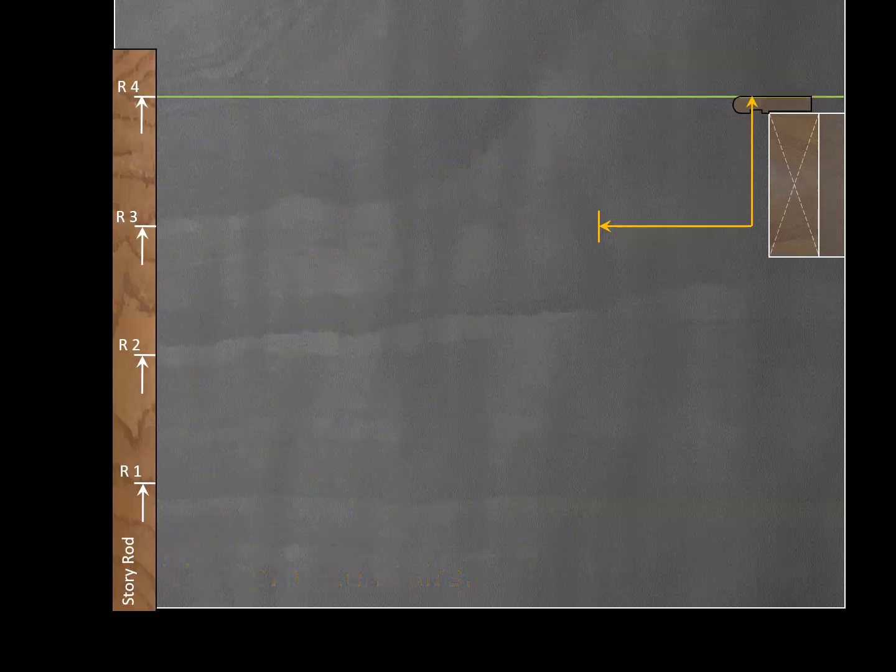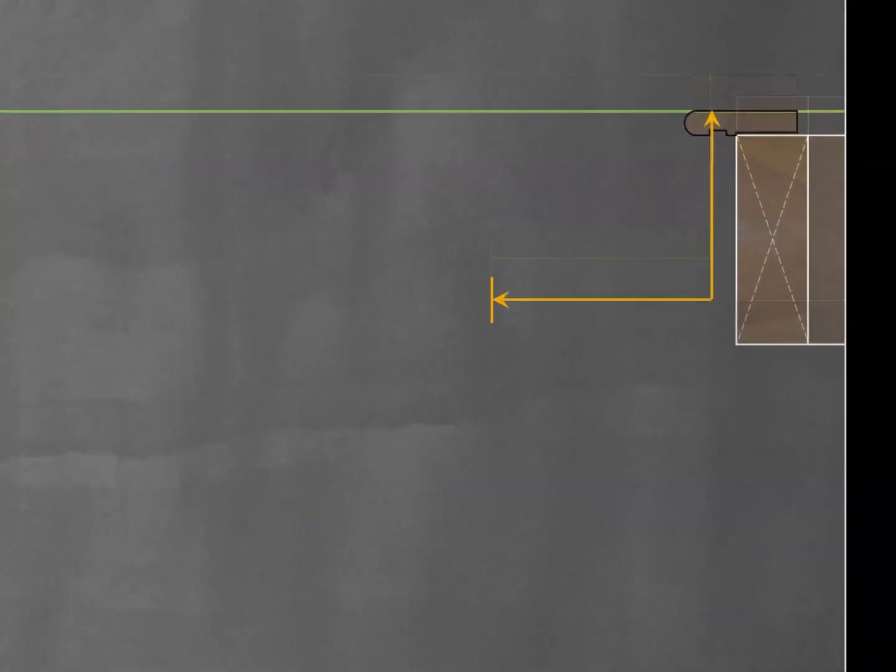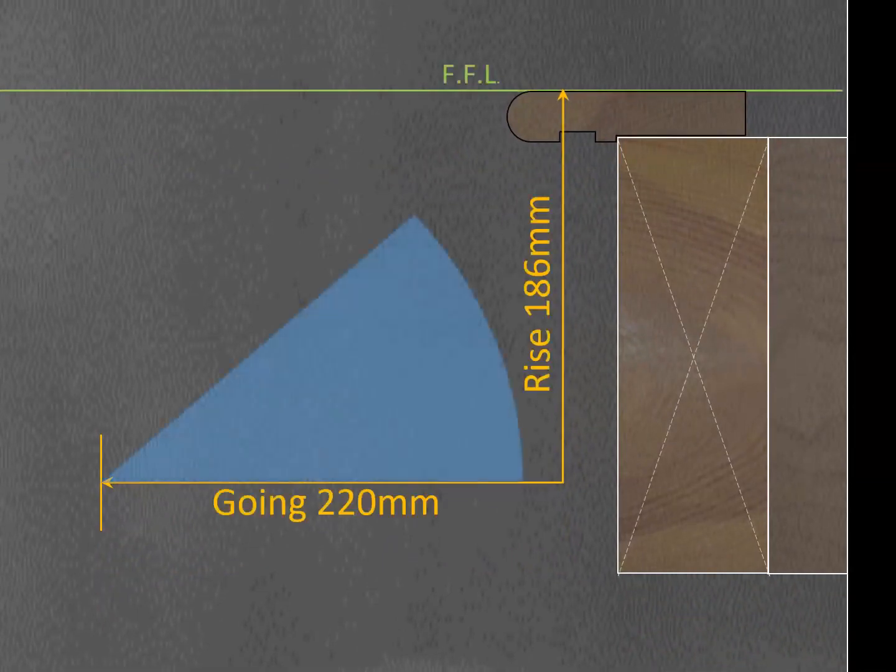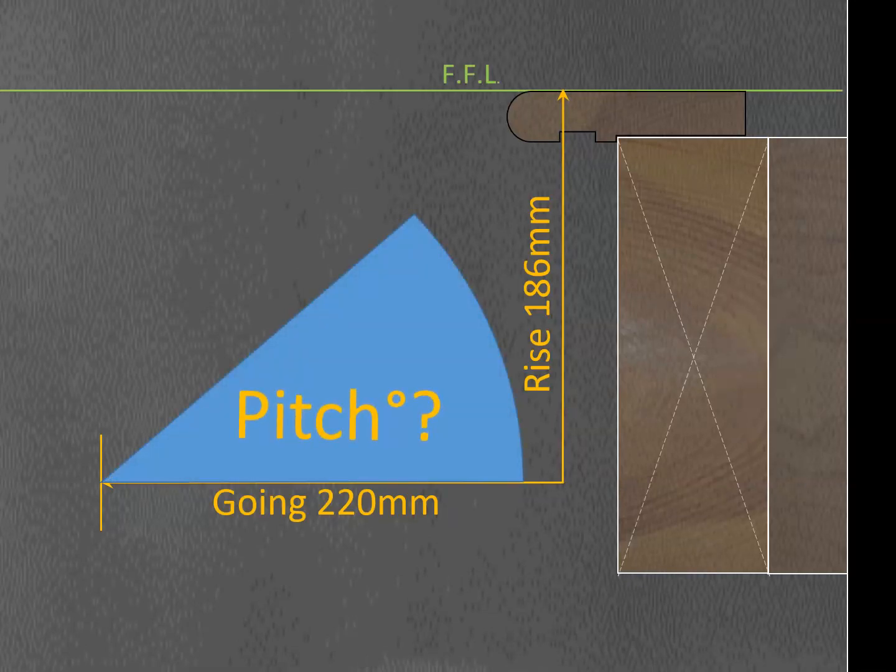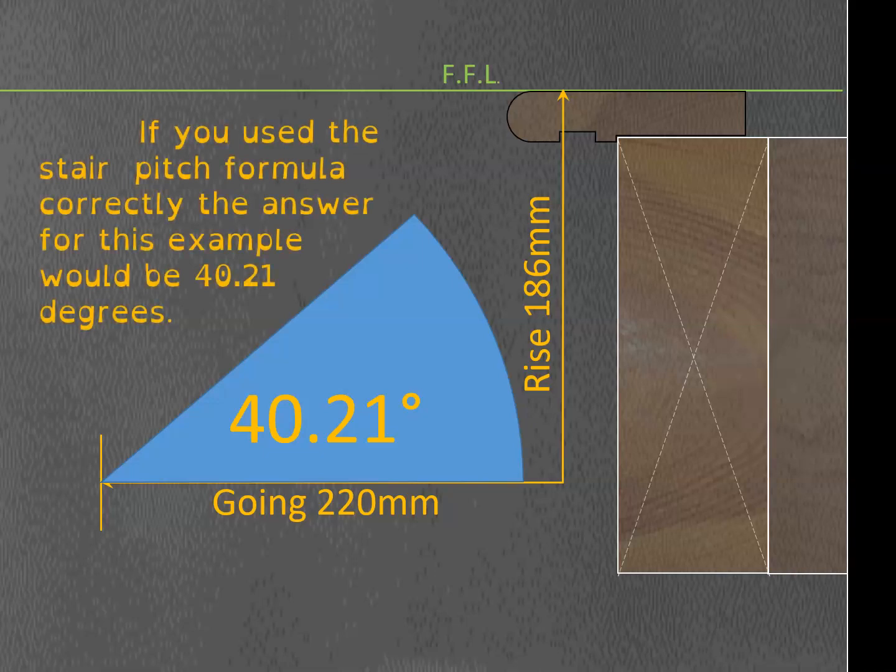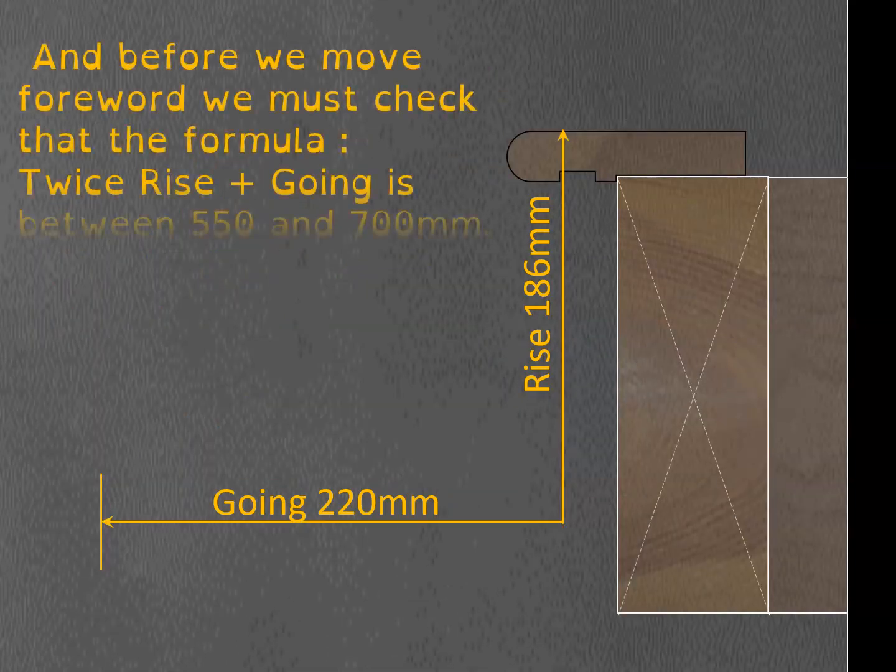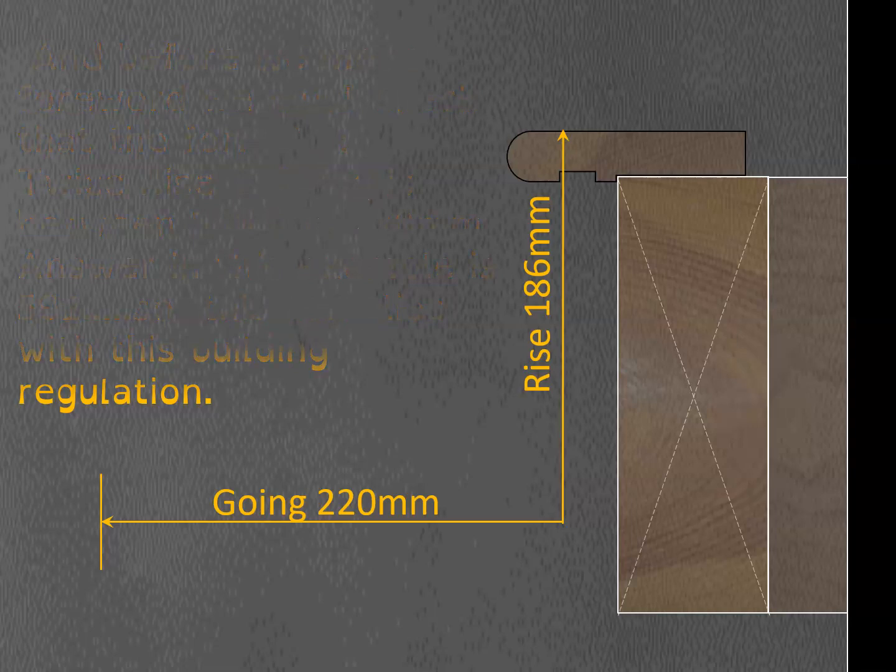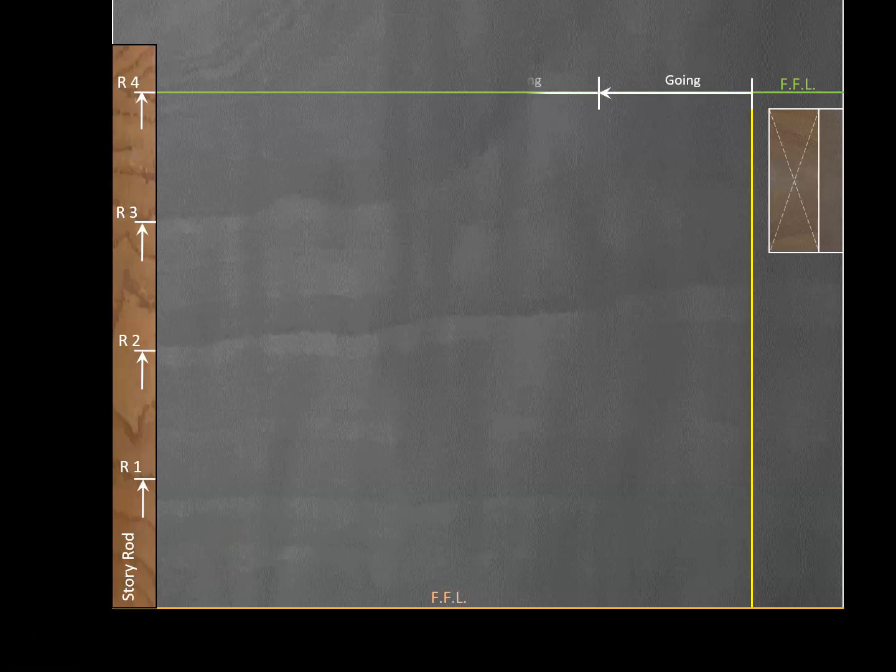When we apply that formula, we are indeed below that maximum of 42 degrees, so we're compliant. Our pitch is 40.21 degrees after applying the formula. Once we have that established, we need to check another formula: twice the rise plus the going has to come between 515 and 700 millimeters. Double the rise plus one going distance must be between 515 and 700, which it is, so we can use that going distance with the rise.